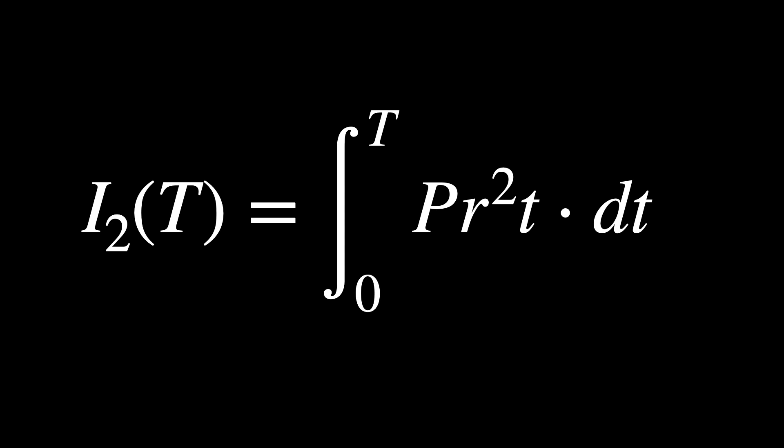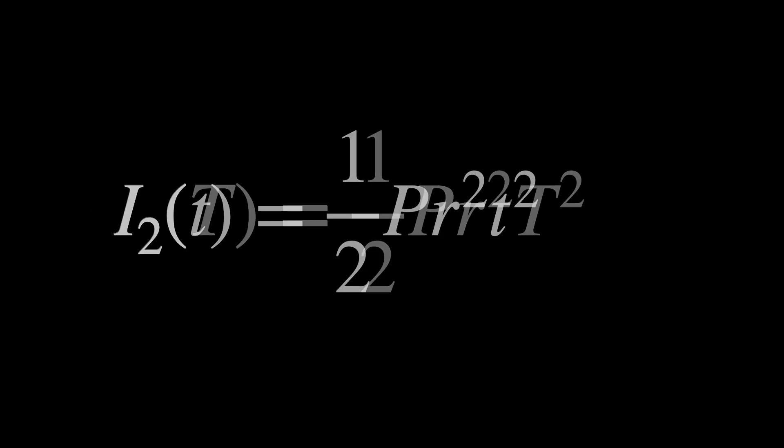Integrating, using the power rule, we get one-half PR squared T squared. We now have a simple expression for the secondary interest as a function of time.